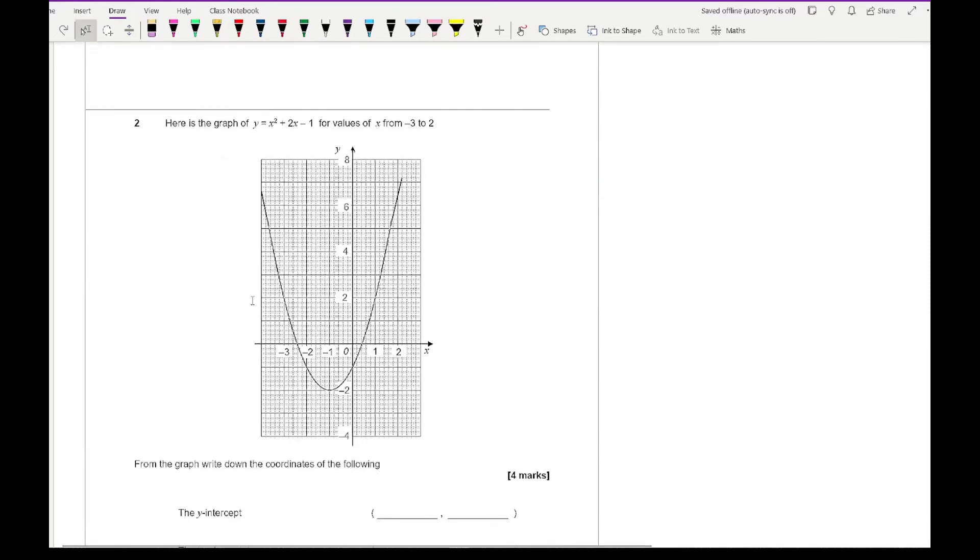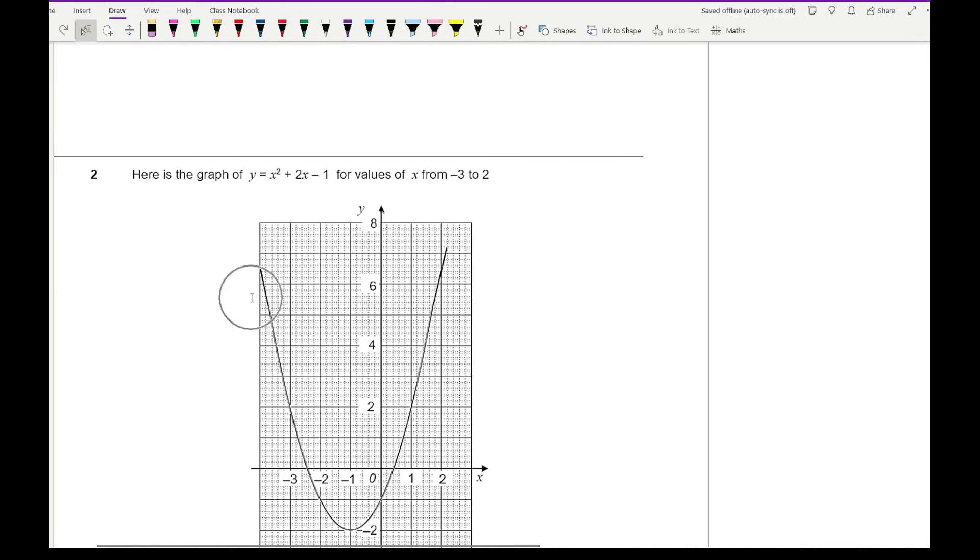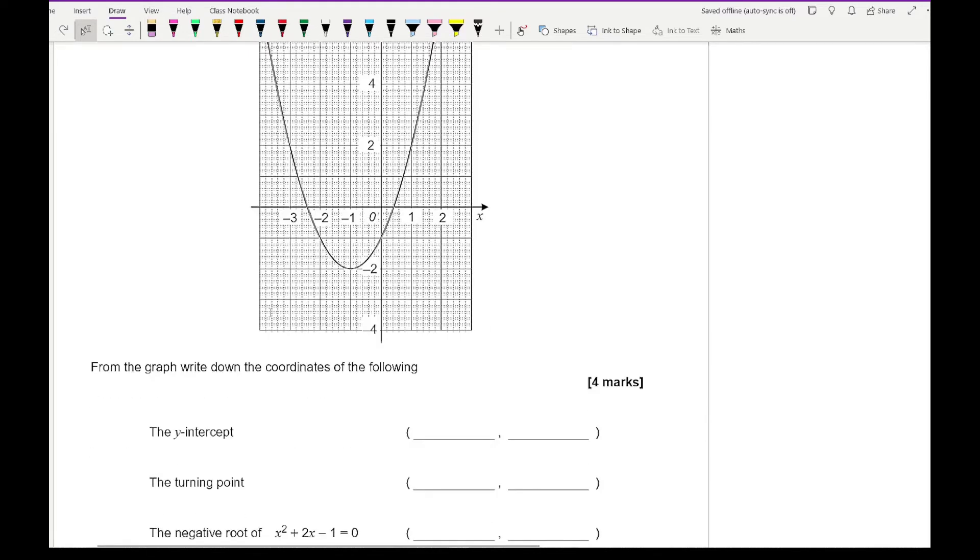Moving on to question two it says here is the graph. Let me just zoom in so we've got a bit of a better view. It says here is a graph of y equals x squared plus 2x minus 1 for the values of x from minus 3 to 2. And it says from the graph write down the coordinates of the following. So here we want the y-intercept so we can see our y-intercept is here. So that is going to give me a coordinate of 0 and it's going to be minus 1. And again what you might find more comfortable is to fill in the missing numbers if you're struggling to read the scale.